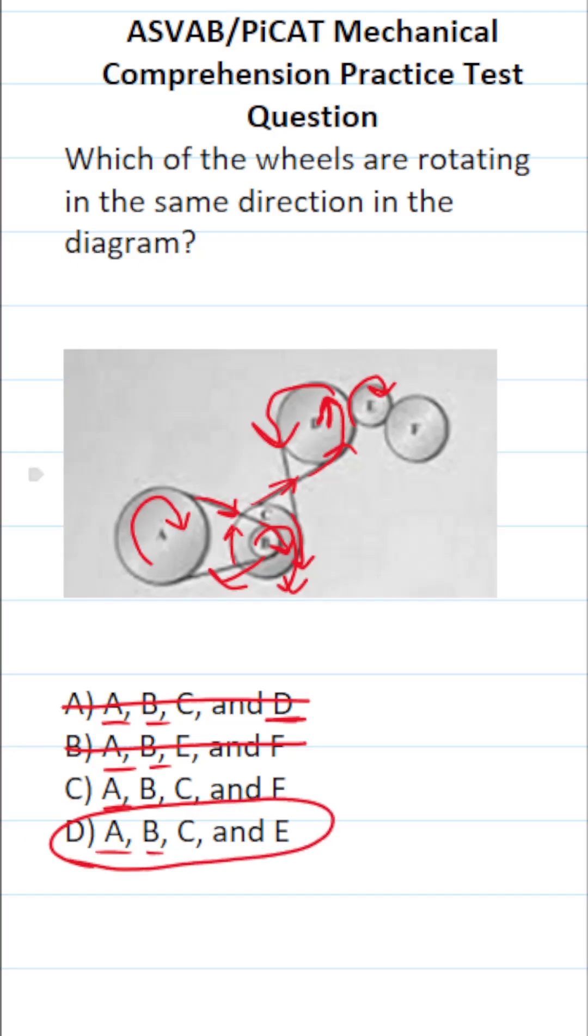But again, wheel E is going to spin wheel F in the opposite direction as wheel A. So this one, again, is going to be D, and that is that one.